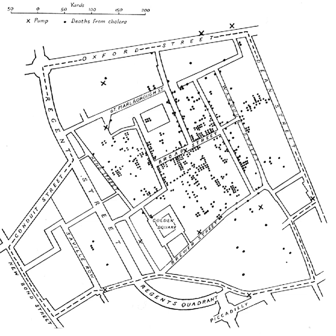Spatial autocorrelation statistics measure and analyse the degree of dependency among observations in a geographic space. Classic spatial autocorrelation statistics include Moran's I, Geary's C, Getis's G, and the standard deviational ellipse. These statistics require measuring a spatial weights matrix that reflects the intensity of the geographic relationship between observations in a neighbourhood, e.g., the distances between neighbours, the lengths of shared border, or whether they fall into a specified directional class such as west.